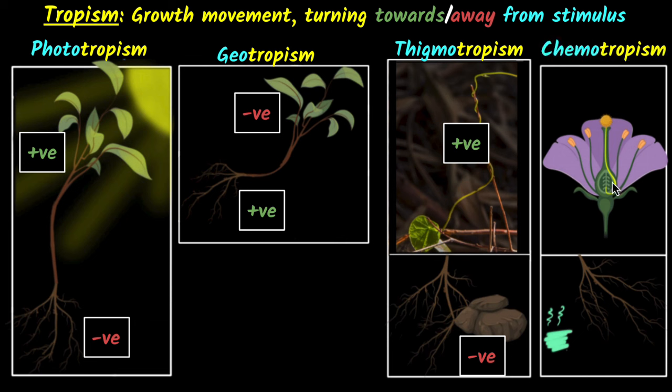Again, you can see here it is going towards the chemical, so it's called positive chemotropism. Over here it's turning away, so this is negative chemotropism.